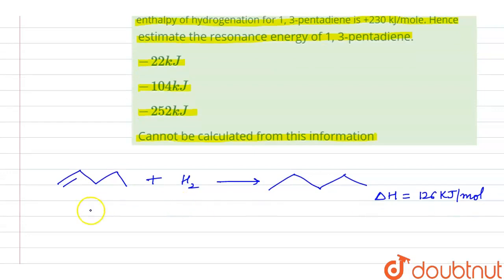And also for 1,3-pentadiene, hydrogenation enthalpy. So hydrogenation will form pentane. And for this Delta H is given as 230 kJ per mole.